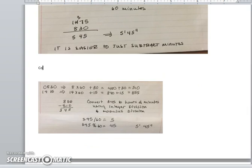In order to convert everything to minutes, to convert 0830 to minutes you take 8 hours times 60 minutes, add the 30 minutes, and you get 510 minutes.